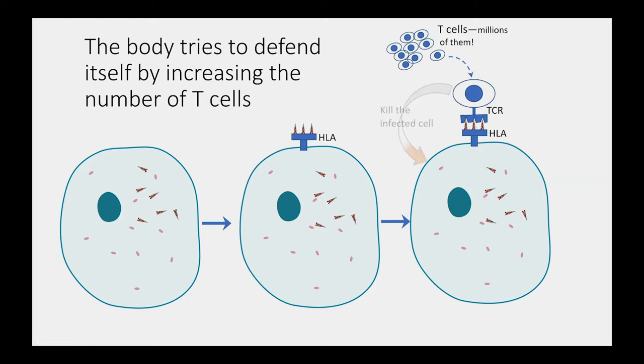then this T cell will do two things. First, it will kill the infected cell. So that's how we get rid of infected cells in our body when we're infected with the virus. And then the second thing is, it will make many, many more copies of itself so that in the future, our body can defend itself against these invading pathogens.